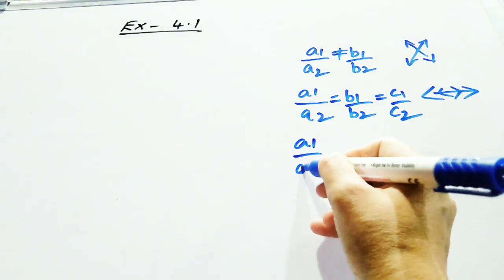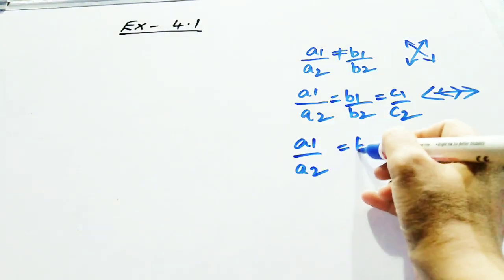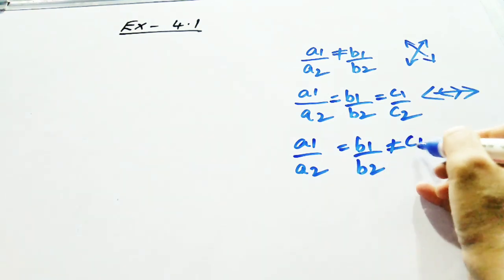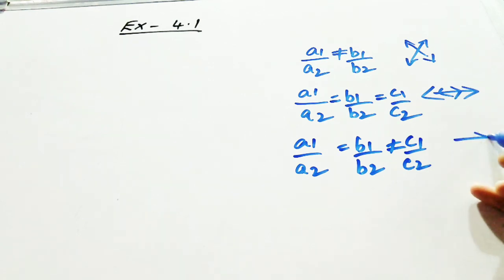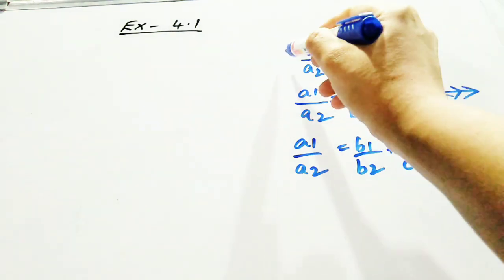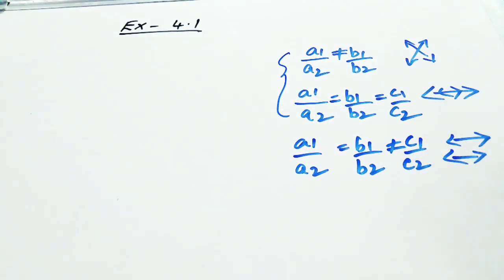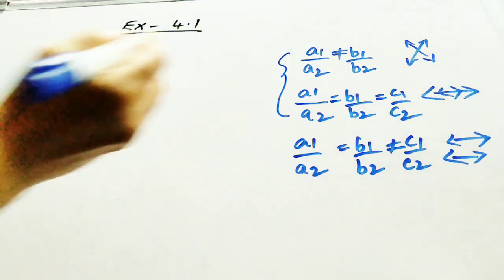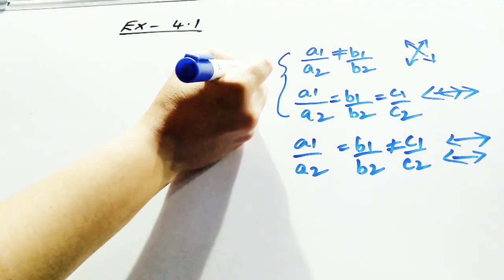Third one, if a1 upon a2 is equal to b1 upon b2 is not equal to c1 upon c2, it is considered as parallel equation. What we say is that these two types, intersecting and coincident, are also called consistent pair of linear equations.